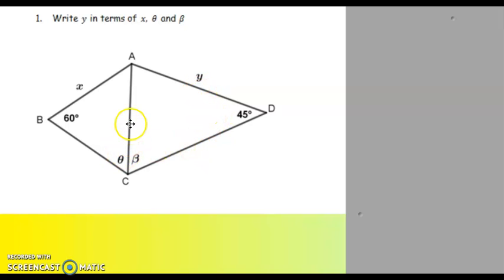Then I will write this angle, this side in terms of sine of 60 over this side and sine of theta over that side. So my common side in both triangles is AC.